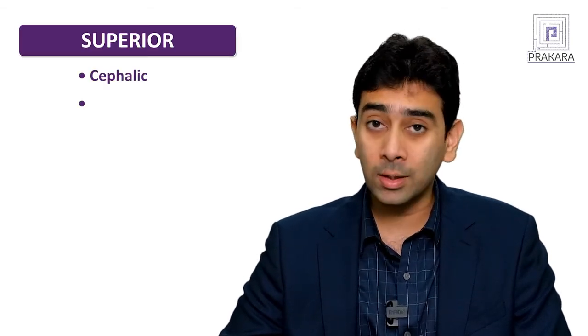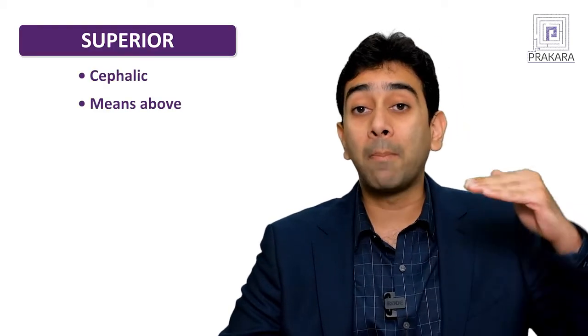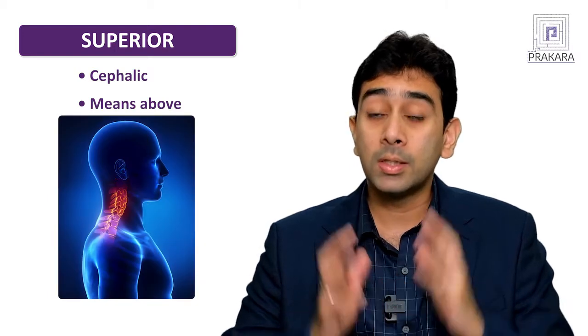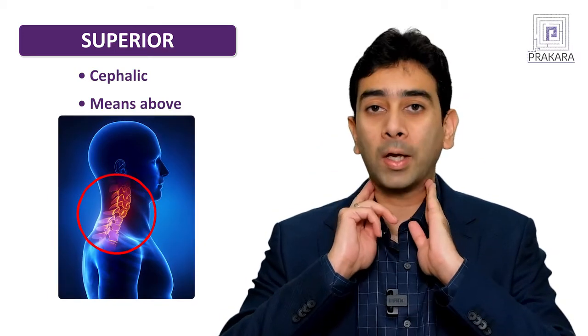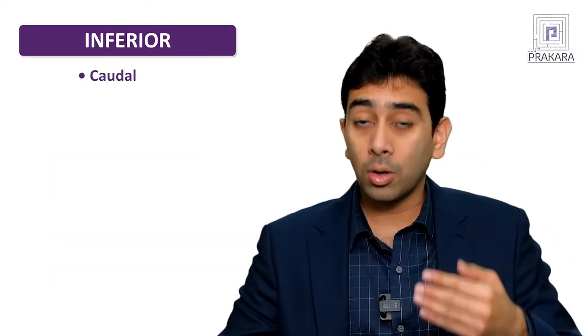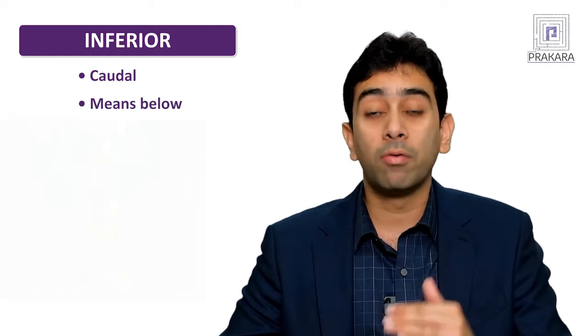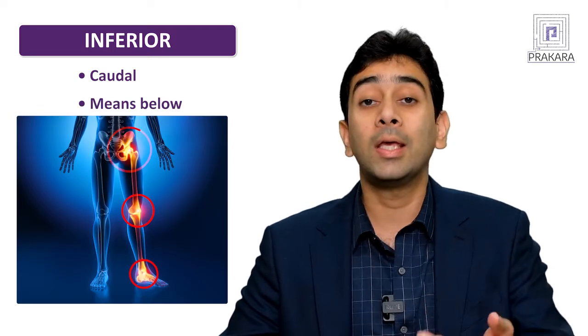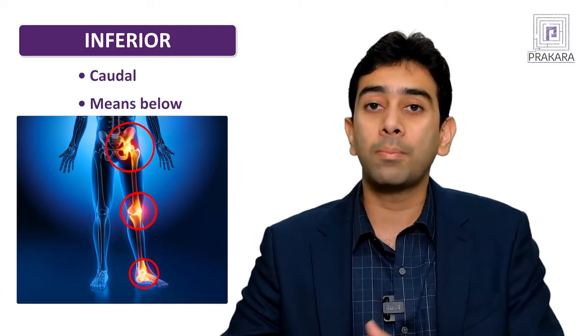The first pair of directional terms are superior or cephalic, which means above. For example, the head lies superior to the neck. The opposite of superior is inferior or caudal, which means below. For example, the legs lie inferior to the abdomen.